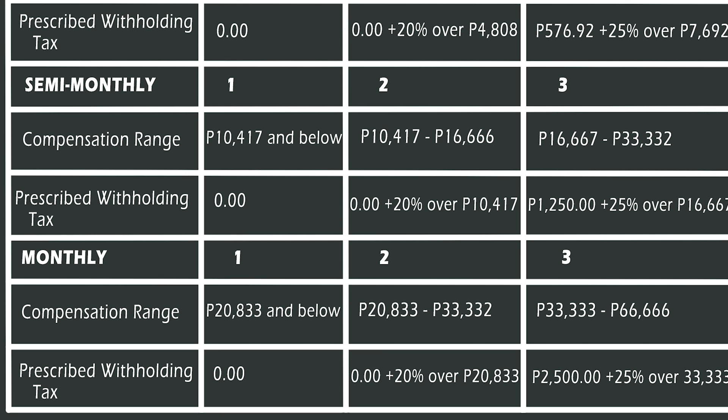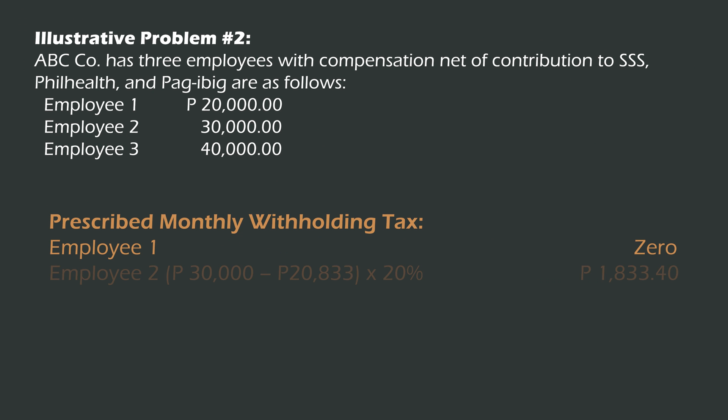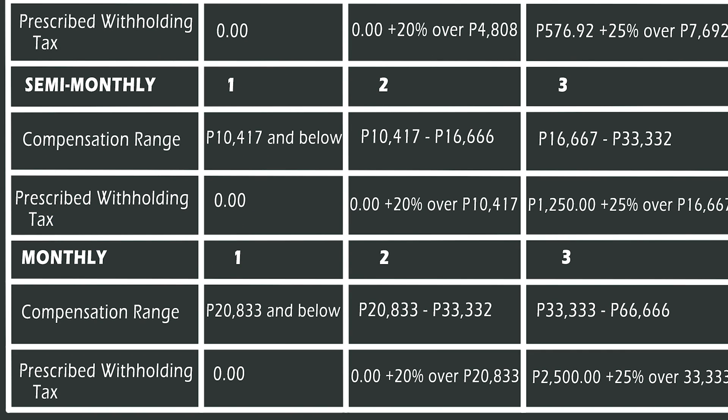For Employee 2, the taxable salary is 30,000, and bracket two will be applicable. To compute the prescribed withholding tax, from 30,000 deduct 20,833, giving an amount of 9,167. This amount will be multiplied by 20%, therefore the withholding tax for Employee 2 will be 1,833.40.